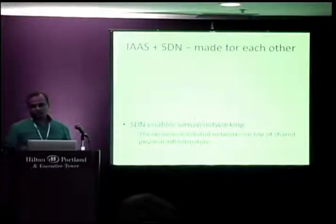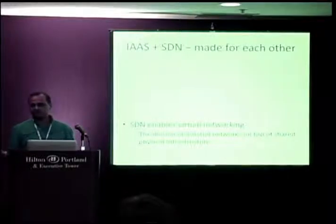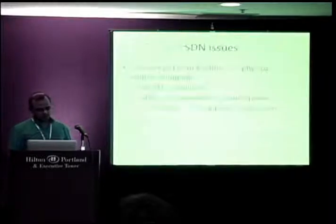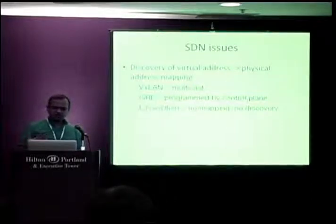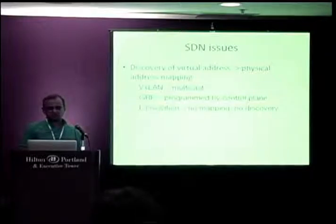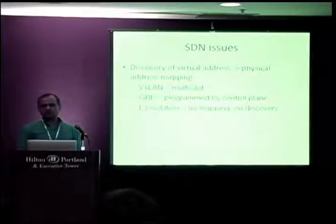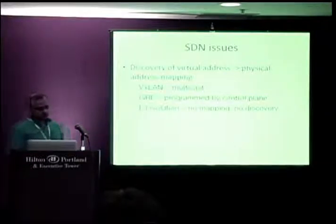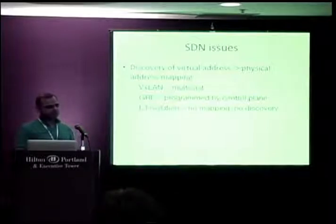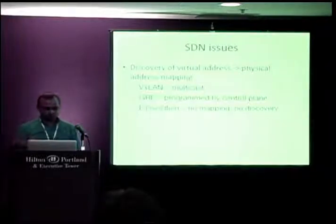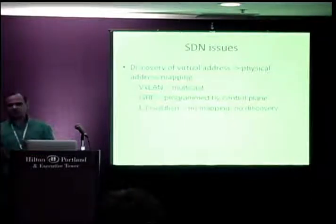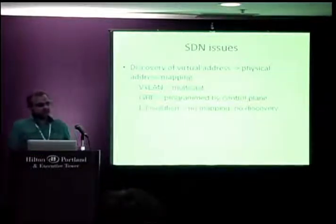SDN and IaaS are made for each other. The SDN API gives you agility to make quick changes to the network. SDN products are made to work with hypervisors and virtualization. The design goal for all these SDN controllers is extreme large scale. And they enable virtual networking — the illusion of isolated networks on top of shared physical infrastructure, so Dave and Joe might have networks in the same cloud, they don't trust each other, but they believe they have isolation.